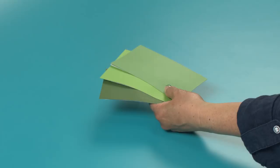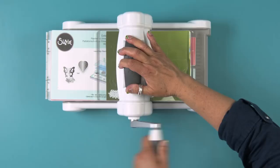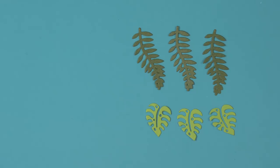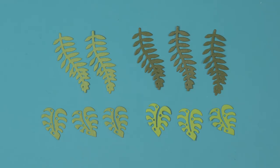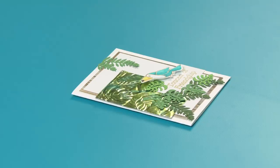Apply the Sizzix Adhesive Sheet to the back of each piece of green cardstock. Die cut from the green papers: three vines from the dark green paper, three leaves from the light green paper, two vines and three leaves from the medium green paper. Adhere the darkest leaves first and finish with the lightest leaves on top. Trim any excess leaves.